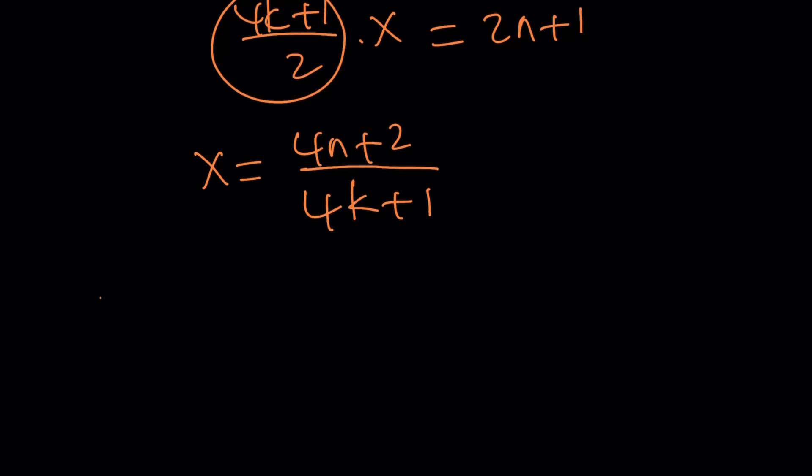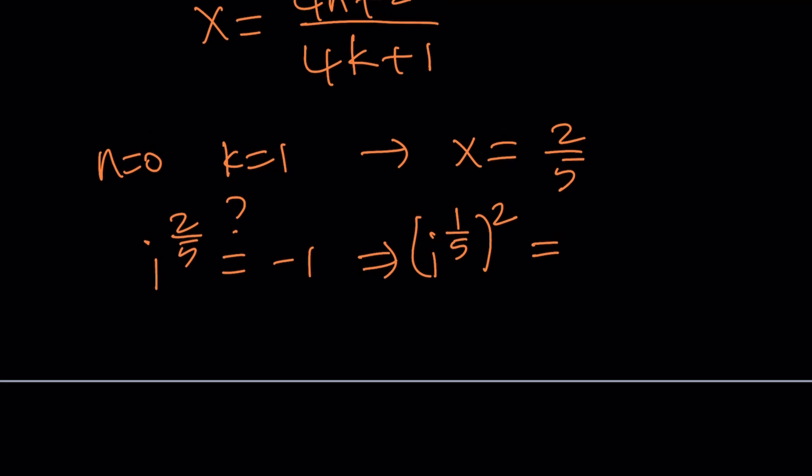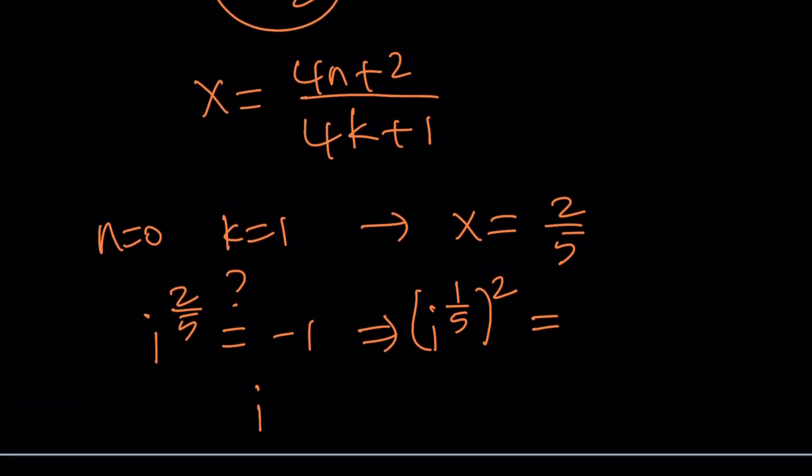And let's see if this is going to work. Well, if you replace n with 0 and k with 1, you're going to get x equals 2 over 5. Do you think this is going to work? i to the power 2 over 5 is equal to negative 1. Is that correct? Well, think about it. i to the power 1 over 5 is going to be squared. And now, i to the power 1 fifth, like we're talking about the fifth roots of i. And whatever that number is when you square, is that going to be negative 1? Or you can look at it this way too. i to the power 2 to the power 1 fifth. This is going to be negative 1. And negative 1 to the power 1 fifth is one of the roots of negative 1 going to be negative 1. Something to think about, right?